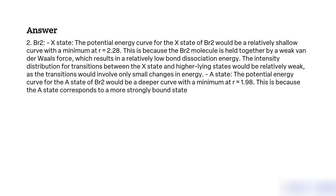BR2 X state: The potential energy curve for the X state of BR2 would be a relatively shallow curve with a minimum at R equal to 2.28. This is because the BR2 molecule is held together by a weak Van der Waals force, which results in a relatively low bond dissociation energy. The intensity distribution for transitions between the X state and high-lying states would be relatively weak, as the transitions would involve only small changes in energy.